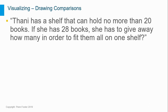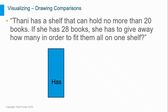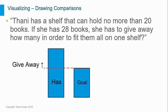Let's look at the changes and comparisons in some example problems. Thani has a shelf that can hold no more than 20 books. If she has 28 books, she has to give away how many in order to fit them all on one shelf? We are finding the difference between the number of books she has and the number she can fit on the shelf. Our diagram might look something like this — the amount of books she has is more than the amount she needs, and the difference between them is the amount to get rid of. Once we have the basic idea drawn, we can add in the numbers. This drawing helps make it clear that we need to find the difference between 28 books and 20 books.